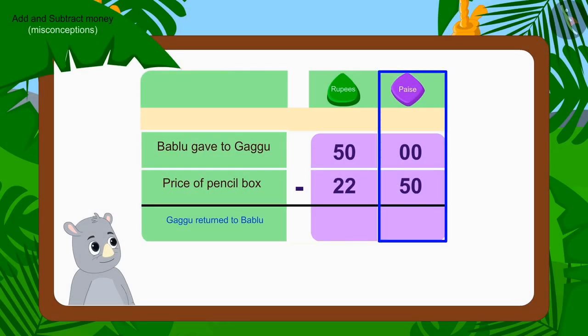First, we will subtract the numbers written in paise. Oh no! Can we deduct fifty paise out of zero paise? No! So, what shall we do now?